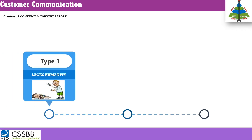The first category is how you deal with customer communication in a professional context. The first category of words is grouped as 'lacks humanity.' For example, when a customer complains and you say 'no, this is not our policy' or 'as per our policy this is not acceptable' — that obviously lacks empathy and humanity. That's the first category.